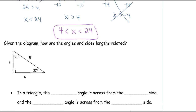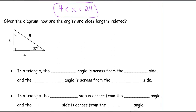Our next problem: given the diagram, how are the angles and side lengths related? I want you to push pause, take a couple minutes, and think about how the angles and sides are related to each other. When you've come up with an idea, push play and see if you're correct. Let's see what you've figured out. I'm looking at my angles: 37°, 53°, and 90°. My sides are 3, 4, and 5.